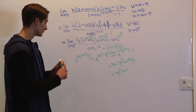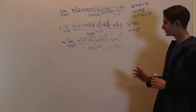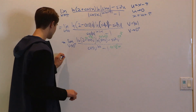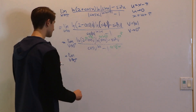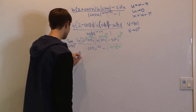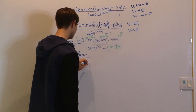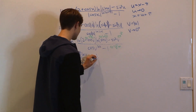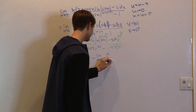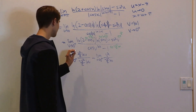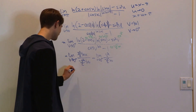Now that we have all these approximations, it's time to plug them in and simplify. We split the limit into two parts. The first part is (v²/2 · ln v) divided by (-v²/2 · ln v). The v²/2 and ln v on top and bottom entirely cancel, leaving just a negative sign, so this first limit evaluates to -1.